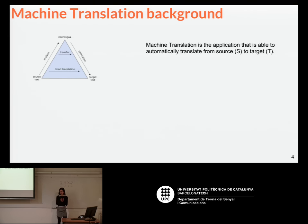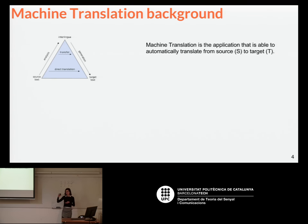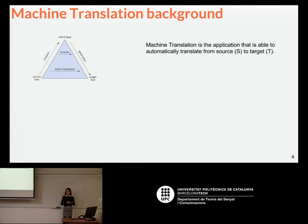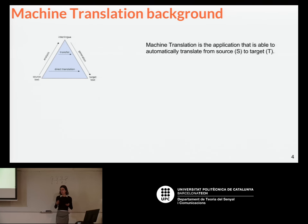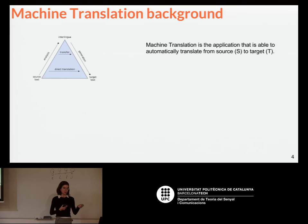Machine translation is the application that is able to translate from a source language to a target language. It has been done from different perspectives. Here we have this backwards pyramid — the classical one — showing how you can approach machine translation. You can go either directly from the source text to the target text with a corpus-based approach like the example-based approach.